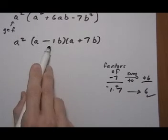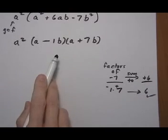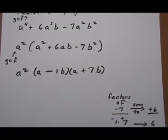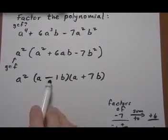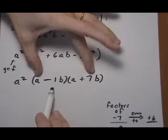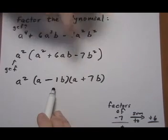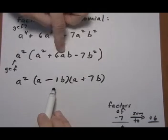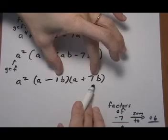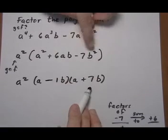Then do a quick check to make sure the trinomial factoring worked. So we want to compare it to the trinomial. a², yep. +7ab - 1ab is +6ab. Yep. -1b times 7b is -7b². So that worked.